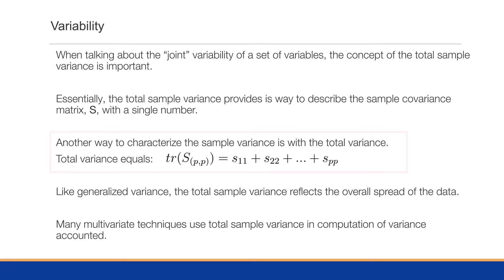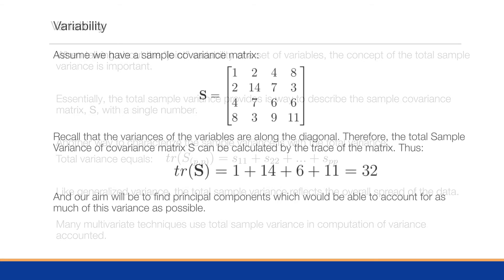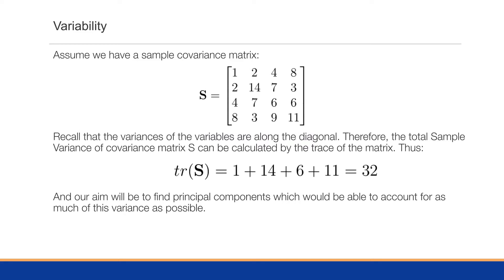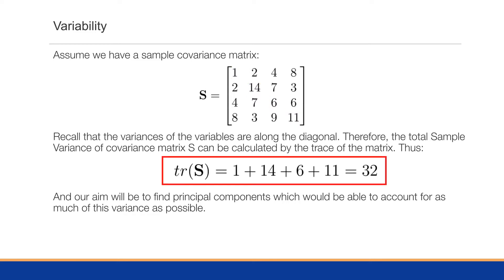The total sample variance provides a way to describe the entire sample covariance matrix with a single number, obtained by taking the trace of the covariance matrix — that is, summing up the diagonal, which contains the variance of each variable. Like generalized variance, the total sample variance reflects the overall spread of the data in multi-dimensional space. For a given sample covariance matrix S, the trace of S equals the total sample variance — in this example, 32.